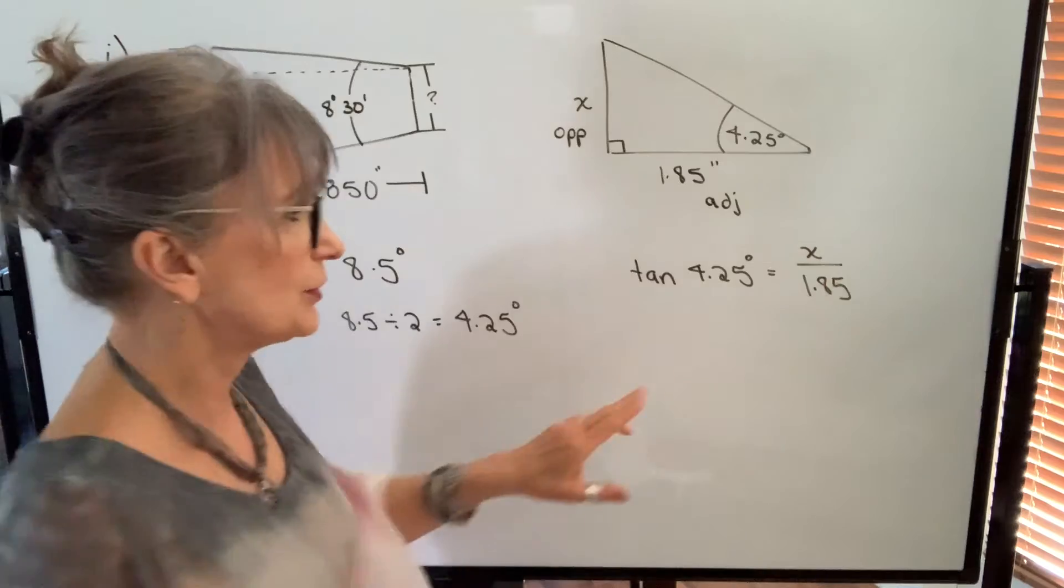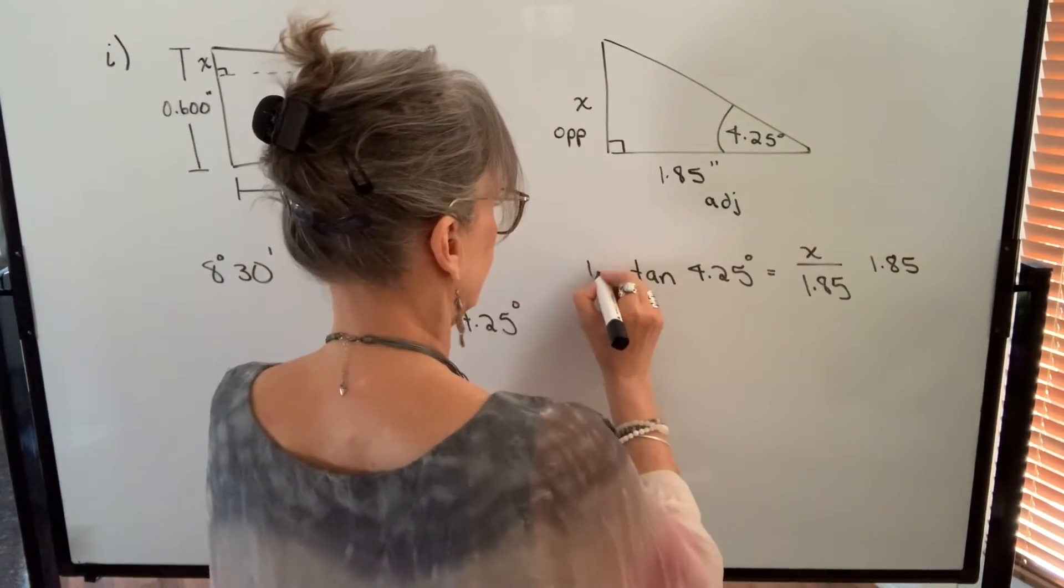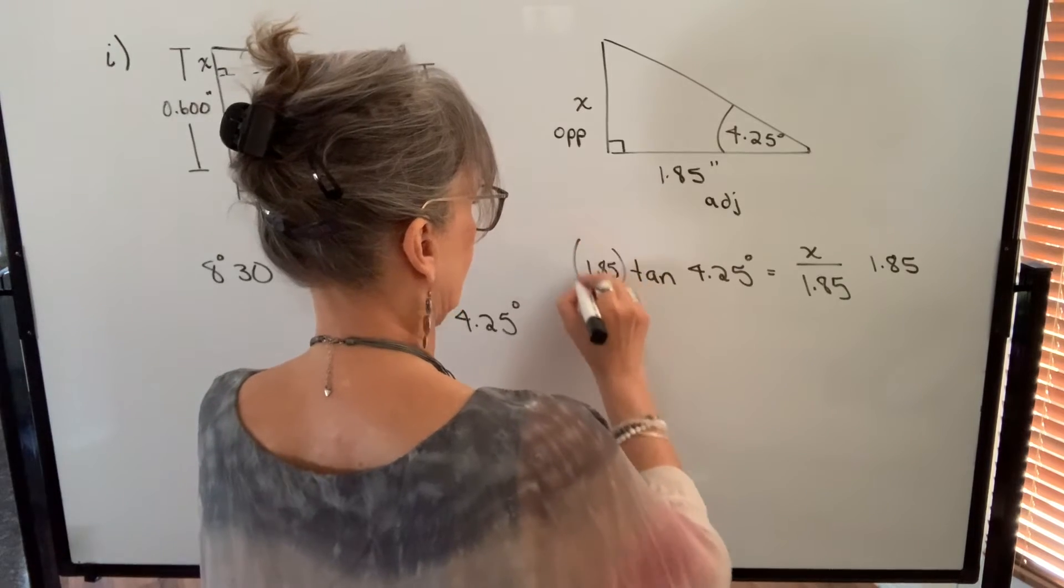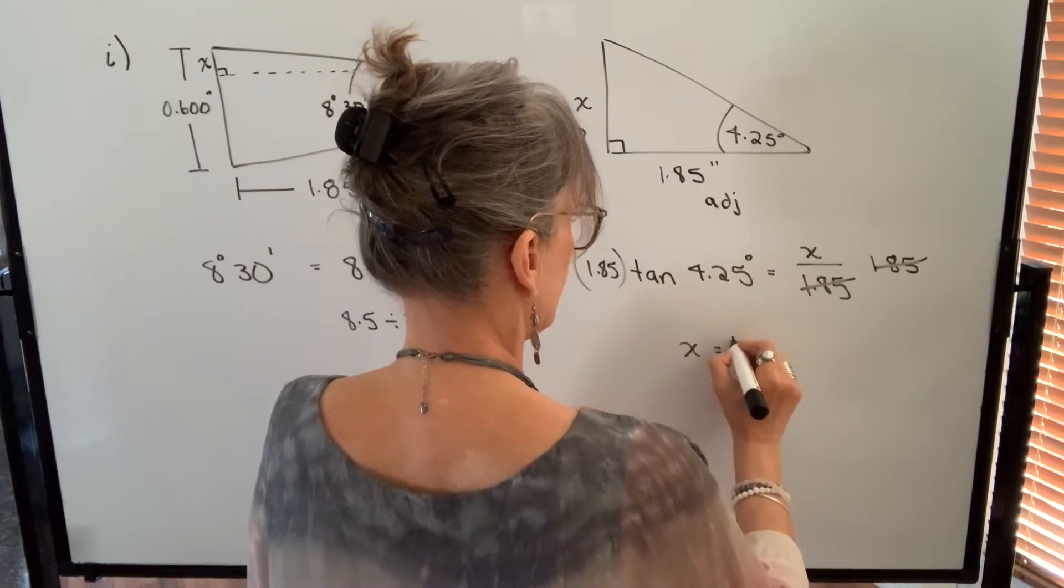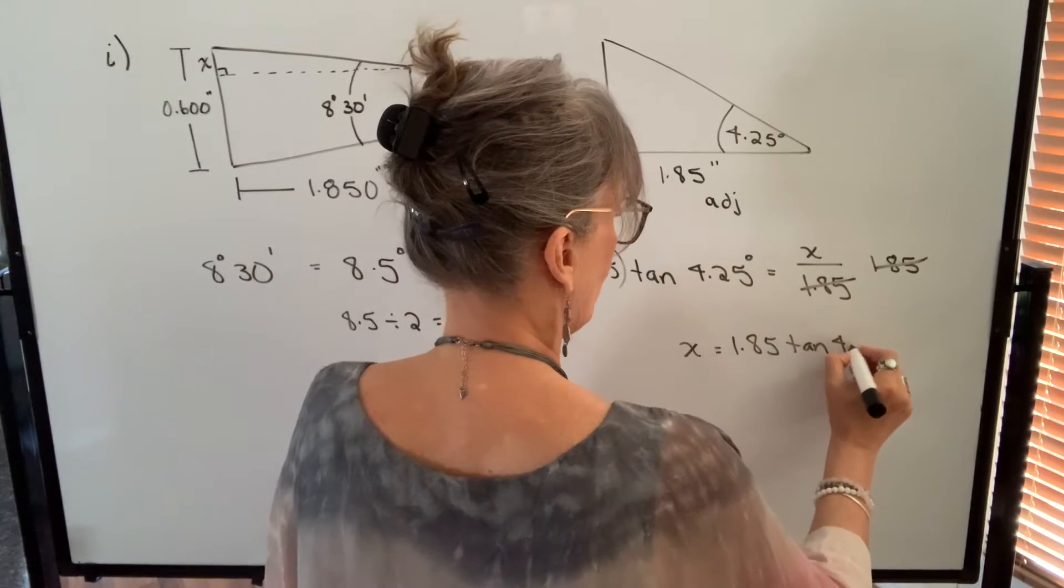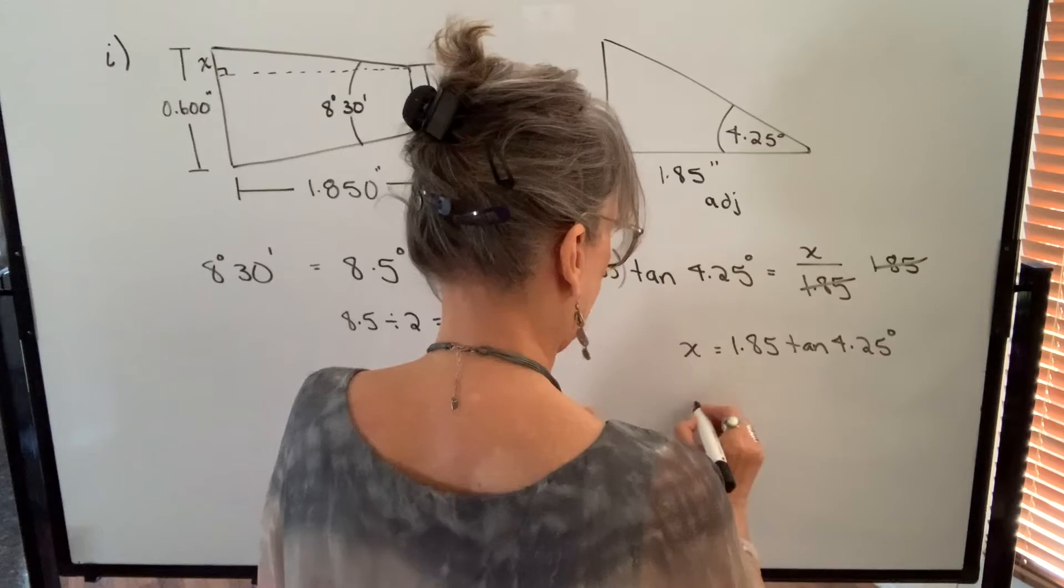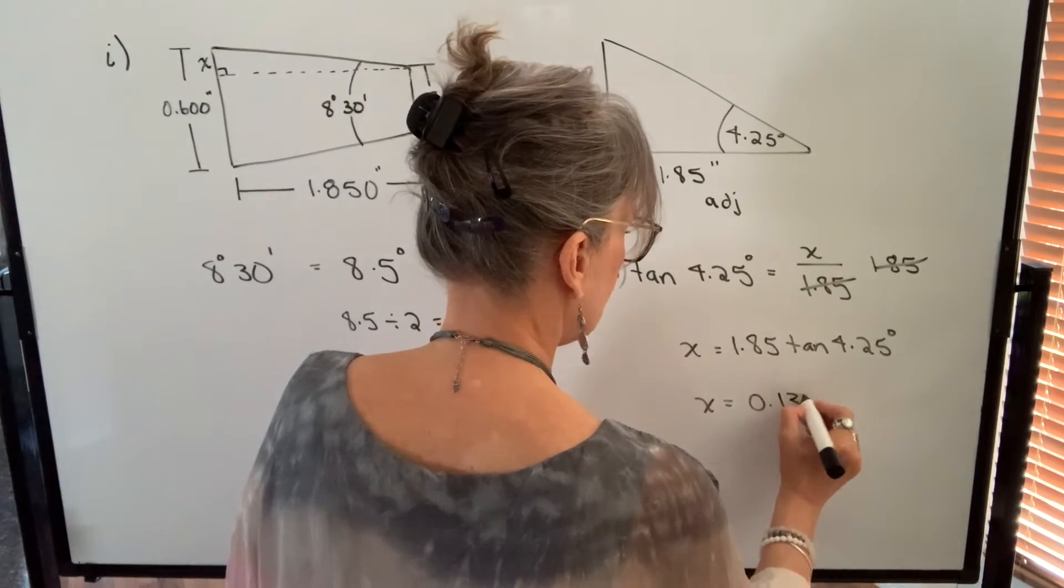In order to do that I'm going to multiply both sides by 1.85. It will cancel on this side. So x will equal 1.85 times the tangent of 4.25 degrees. That will be equal to 0.137.